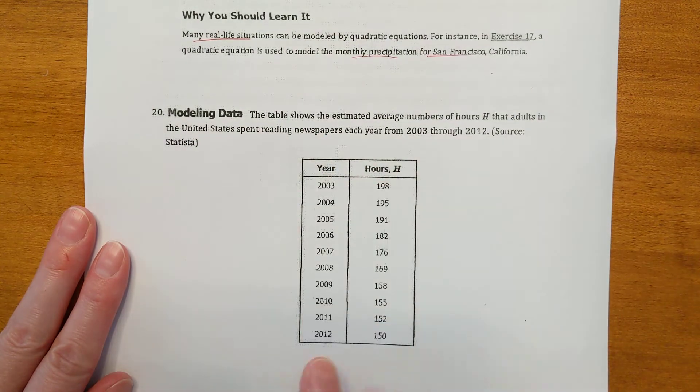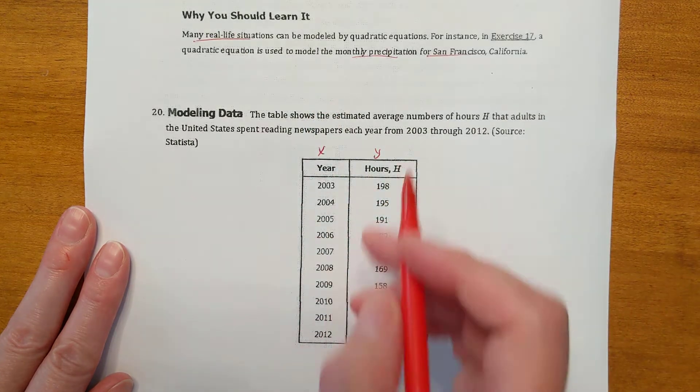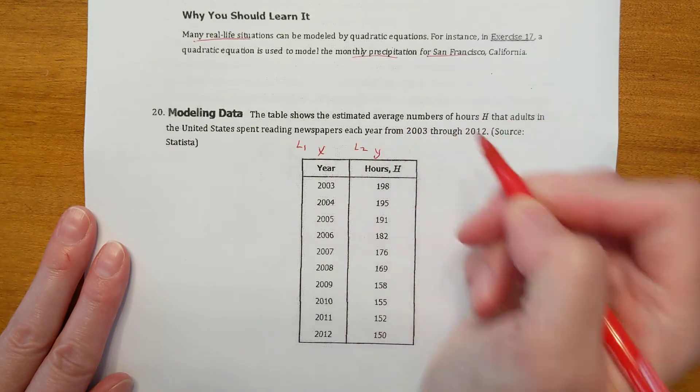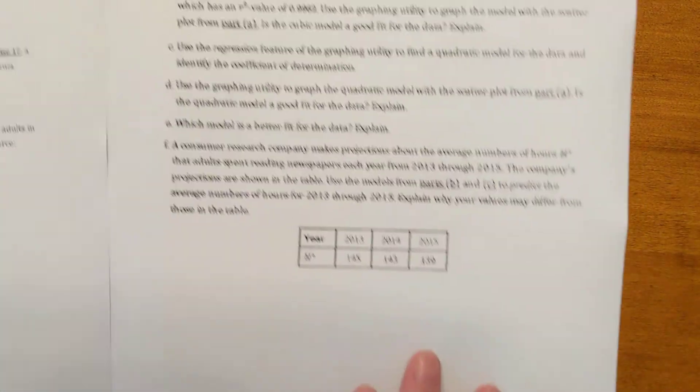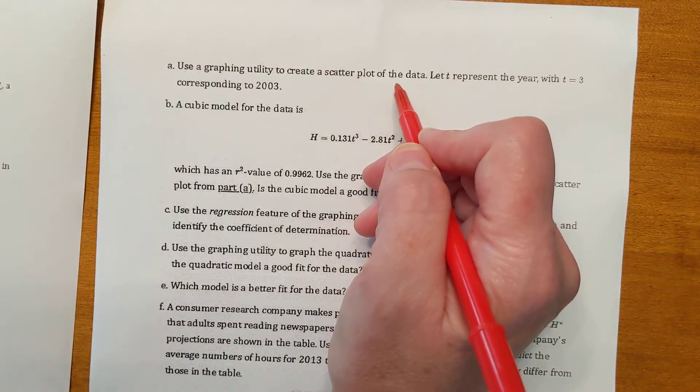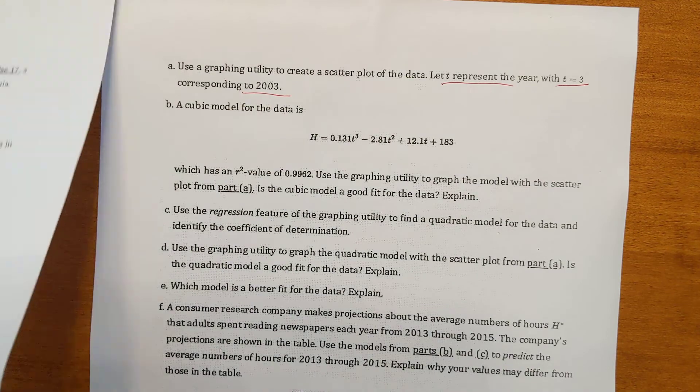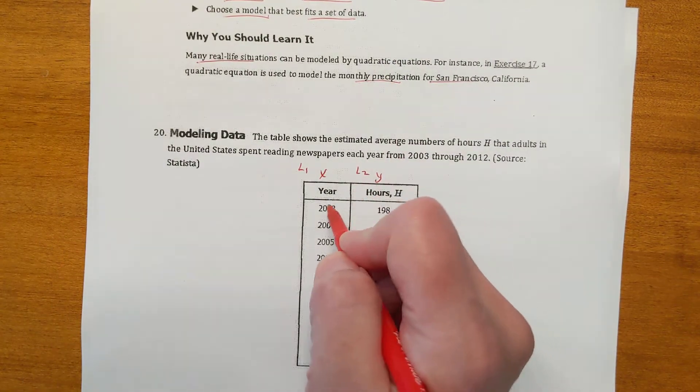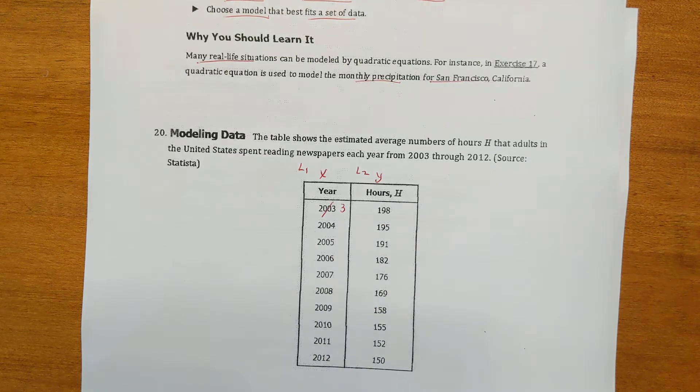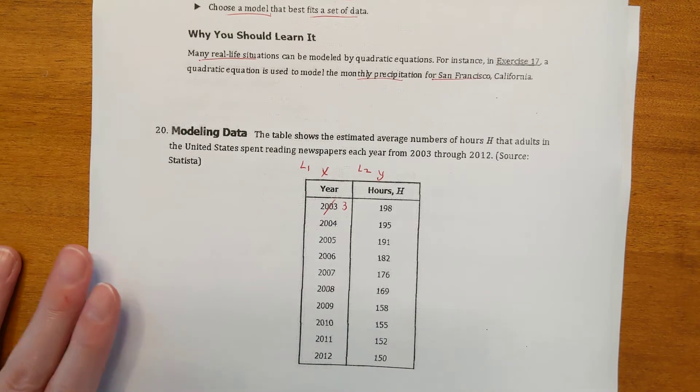We're going to make a scatter plot of this. The one on the left is always the X column, the one on the right, call it Y. In our calculator, we're going to make this list one and the Y is list two. Taking a look at the actual question, it says use a graphing utility to create a scatter plot of the data. Let T represent the year with T equal to three corresponding to 2003. So instead of putting 2003 in your calculator, we're just going to enter the number three. You won't have to make that big a window for it.